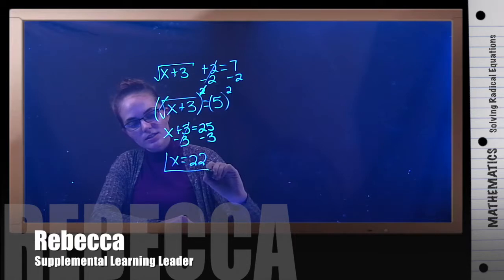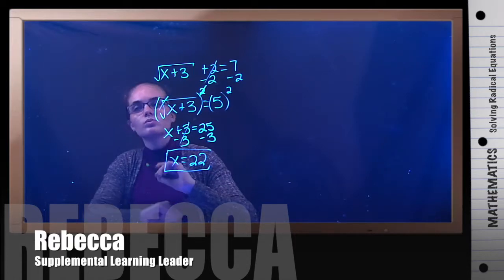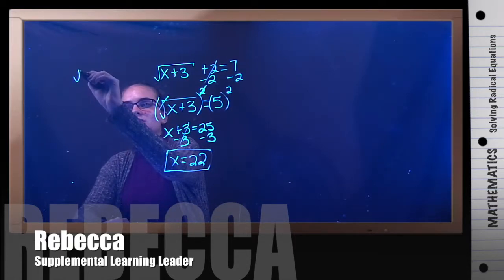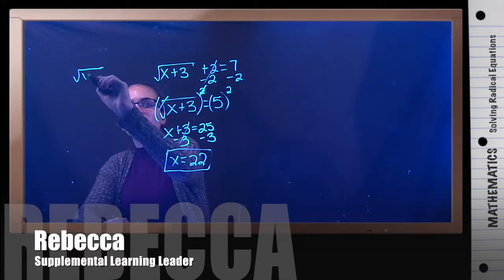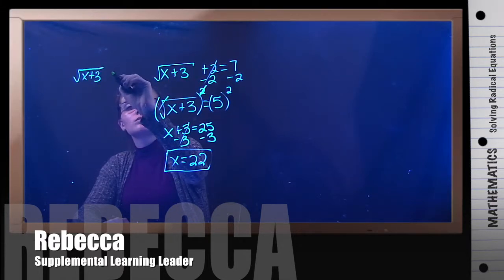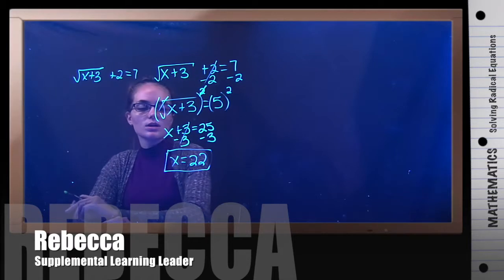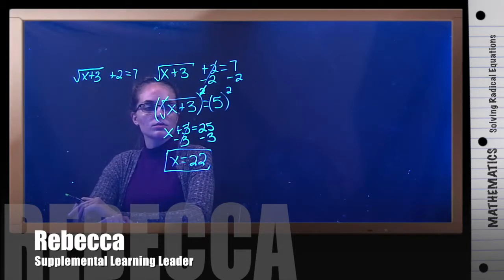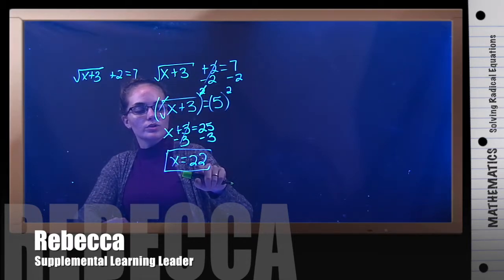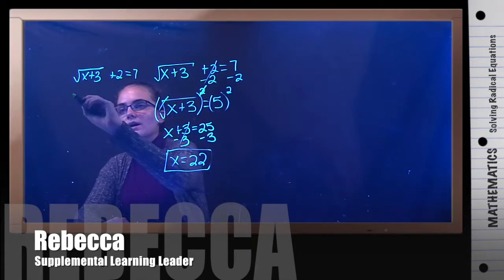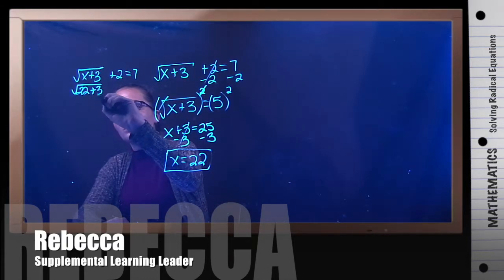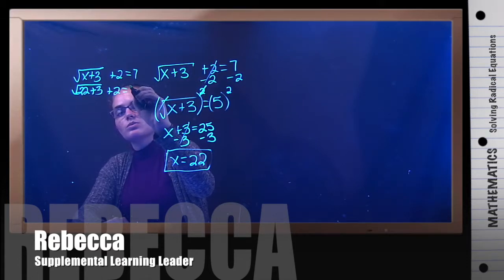Now, that's our tentative answer. Until we check it, we always want to check it using the exact equation that we started with and not manipulating it at all. So, we're going to plug in 22 for our x. So the square root of 22 plus 3 plus 2 equals 7.